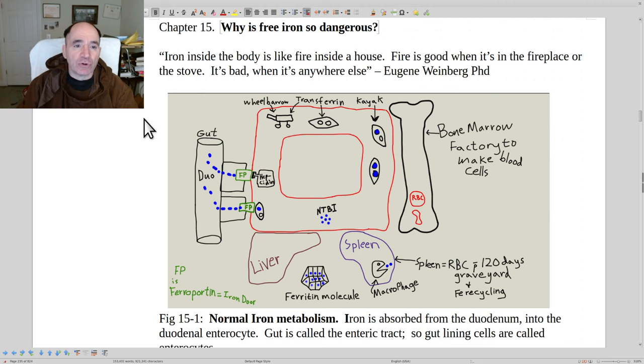The key point is iron typically cycles back and forth between Fe2+ and Fe3+. It's a transitional metal, meaning it has a variable valence, so it can go back and forth between Fe2+ and Fe3+ and hand off electrons to oxygen and generate reactive oxygen species.